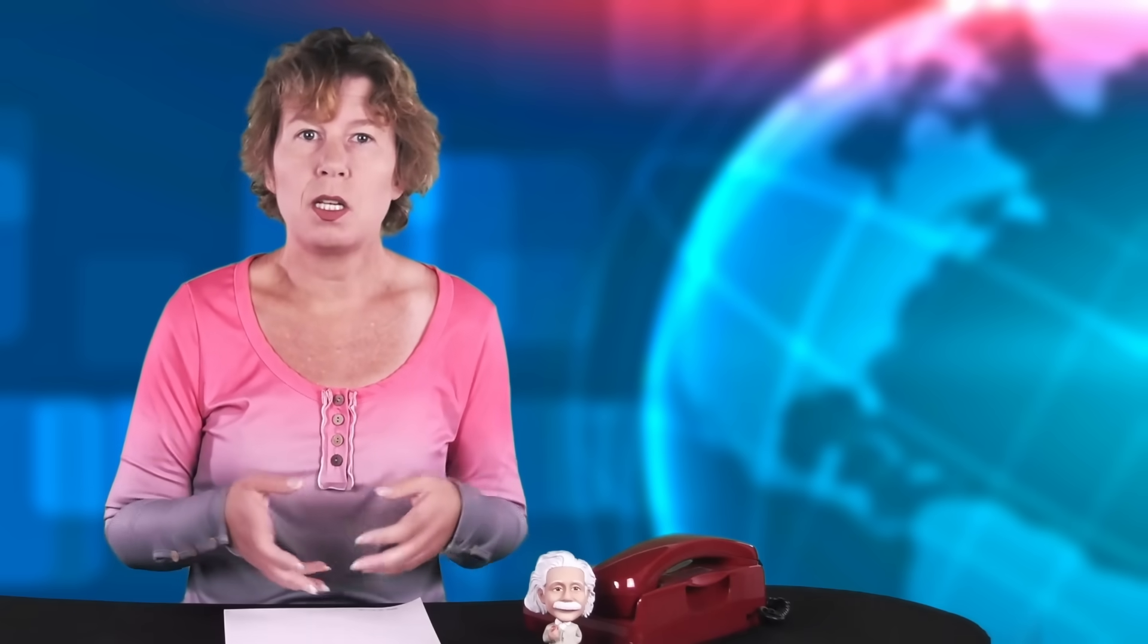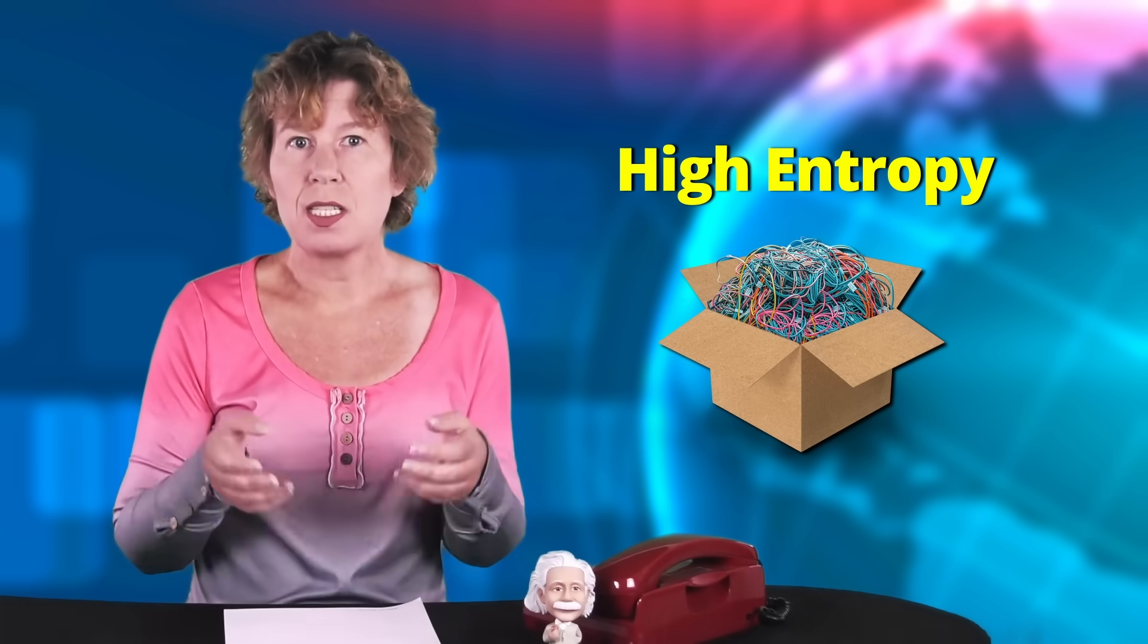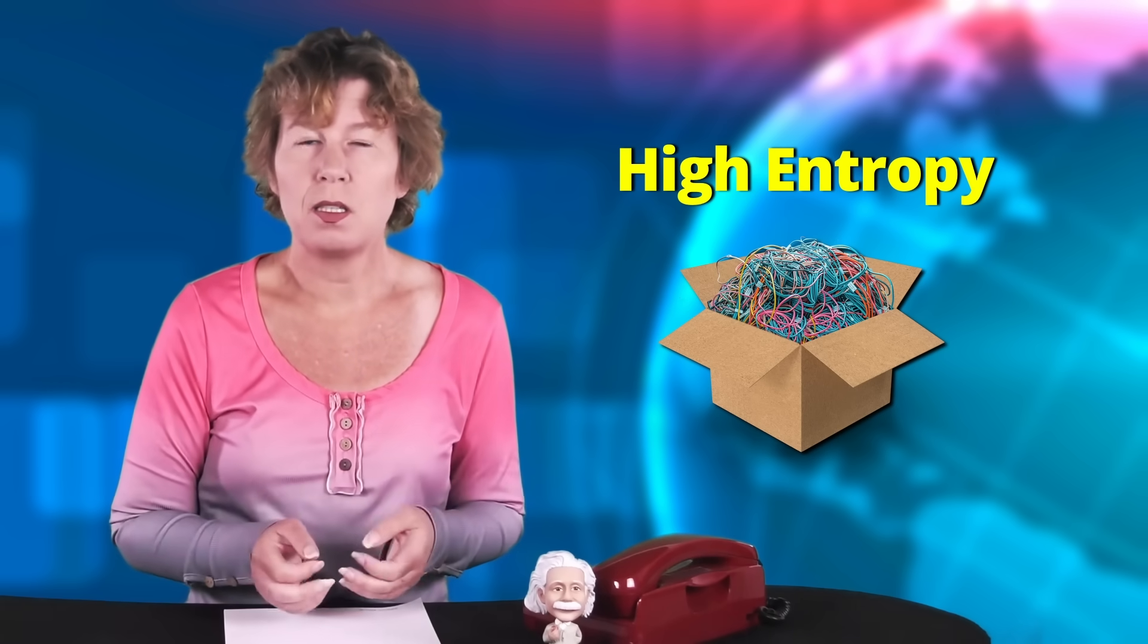But entropy is basically a measure of how many different ways you can arrange a system. There are lots of ways you can stuff your cables into the box so it has a very high entropy. A black hole, however, is the simplest possible object that you can imagine. It's a perfect sphere without any features. So how can it account for all those cables you've thrown in?